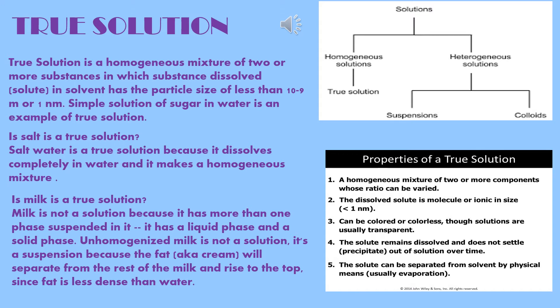A simple solution of sugar in water is an example of a true solution. Is salt water a true solution? Yes, salt water is a true solution because it dissolves completely in water and forms a homogeneous mixture. Is milk a true solution? Milk is not a solution because it has more than one phase — a liquid phase and a solid phase. Unhomogenized milk is a suspension because fat, or cream, will separate and rise to the top since fat is less dense than water. A true solution has a solute particle size of 10⁻⁸ centimeter or 10⁻¹⁰ meter or less.